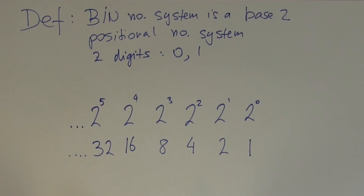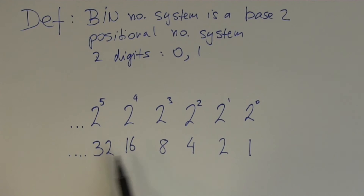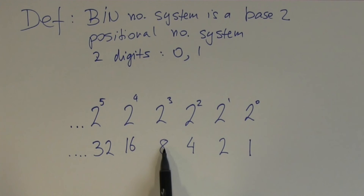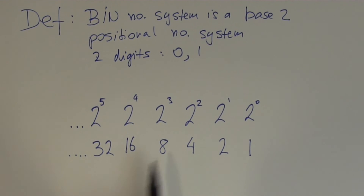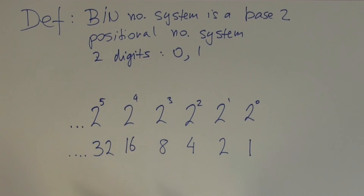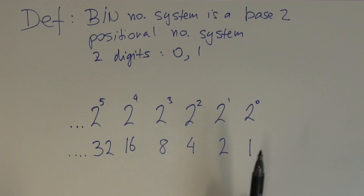When we look at the binary place values compared to decimal, going from right to left the place values get doubled: from 1 to 2, from 2 to 4, from 4 to 8. They double up. Going from left to right they get halved: from 32 to 16 by halving, and from 16 to 8 by halving again. This is a common feature of all place value tables — in any number system, going from right to left the place values get multiplied by the base.